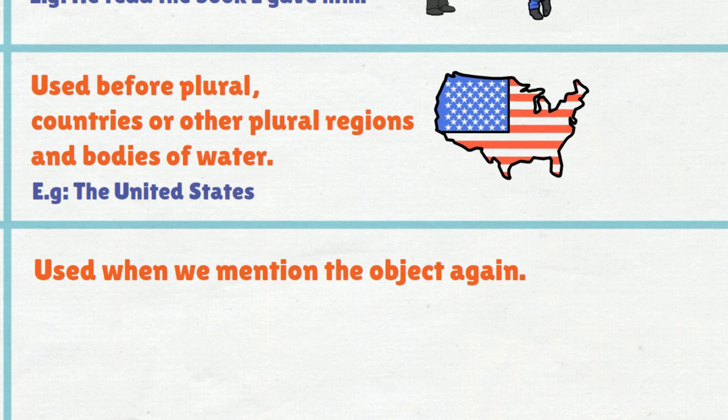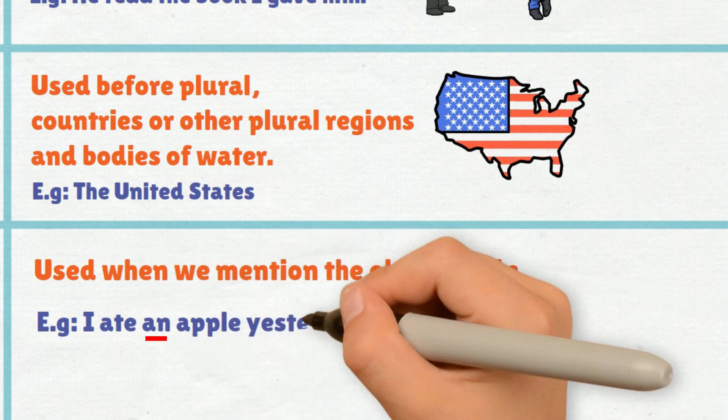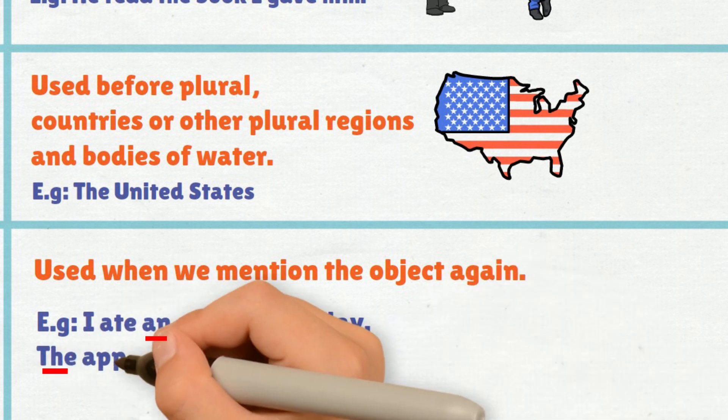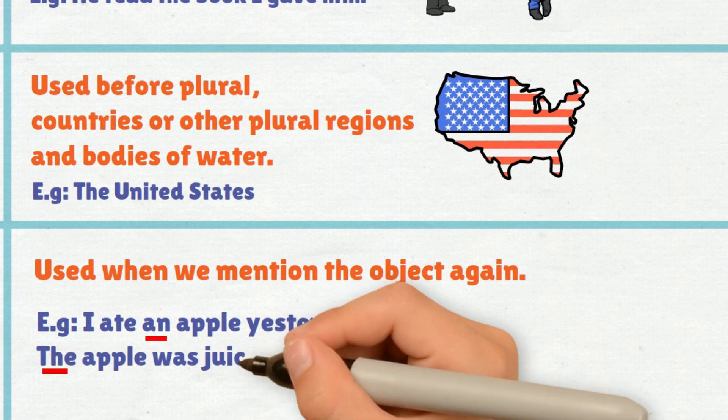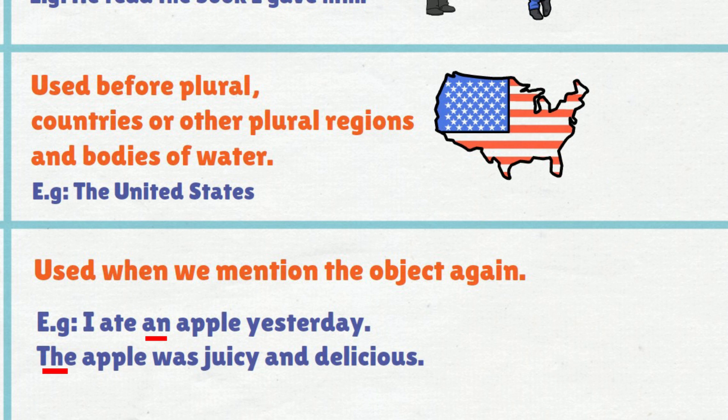The is used when we mention the object again. Example: I ate an apple yesterday. The apple was juicy and delicious.